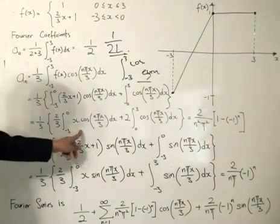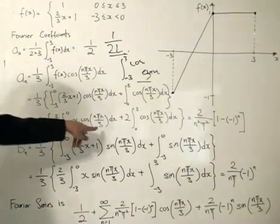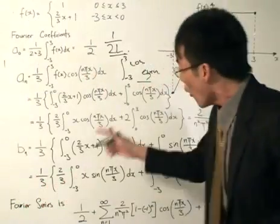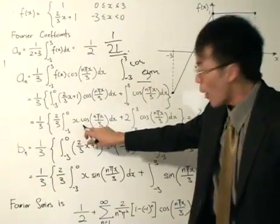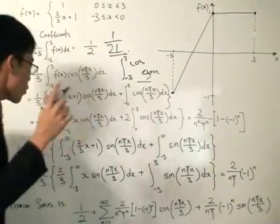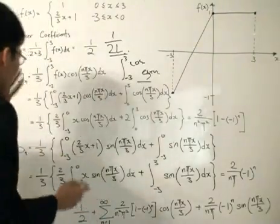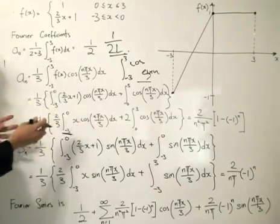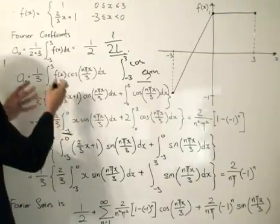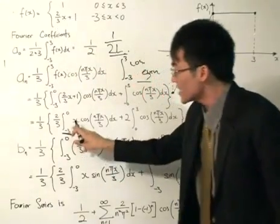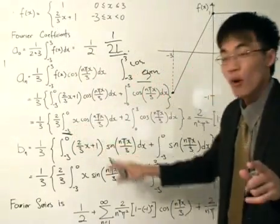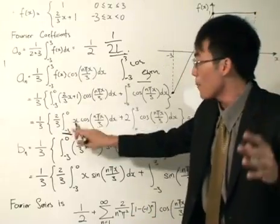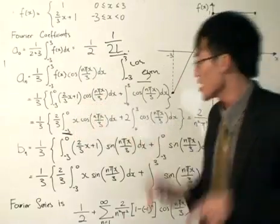x is an odd function and cosine is an even function, so multiplying them gives an odd function. Now, I hope you do not let this equal to zero. Pay careful attention: even though you're integrating an odd function, the limits must be symmetrical, which means minus 3 to 3. But in this case, the limits are minus 3 to 0. You cannot let this equal to zero because the limits are different. An odd function integral is only zero if the limits are symmetrical, for example minus L to L.